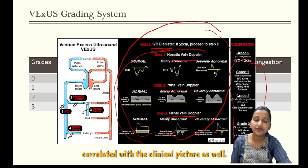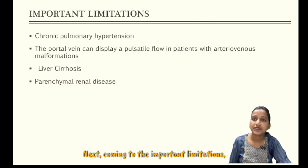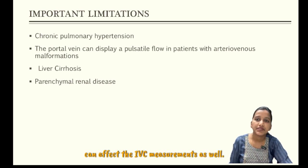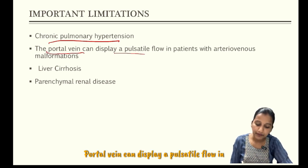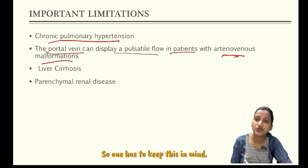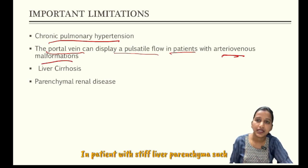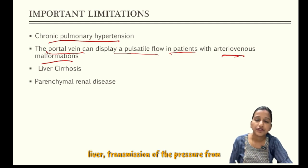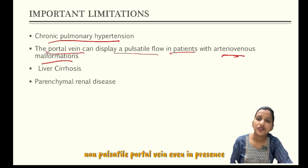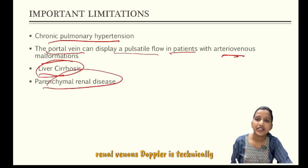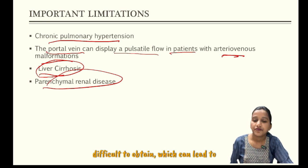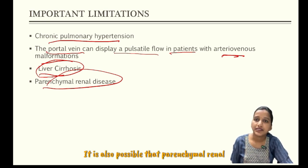This VEXUS score result must be correlated with the clinical picture as well. Coming to the important limitations: increased intra-abdominal pressure can affect IVC measurements. In chronic pulmonary hypertension, the IVC can experience significant size remodeling. Portal vein can display pulsatile flow in patients with AV malformations. In patients with stiff liver parenchyma such as in cirrhosis or non-alcoholic fatty liver, transmission of pressure from the right atrium through the liver sinusoids is dampened. This may lead to a non-pulsatile portal vein even in the presence of severe venous congestion. Regarding renal assessment, intrarenal venous Doppler is technically difficult to obtain and can lead to suboptimal recording. It is also possible that parenchymal renal disease could alter intrarenal Doppler venous waveforms.